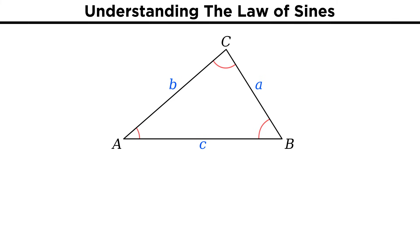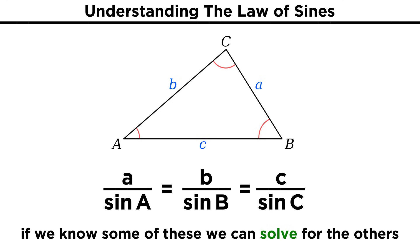This law says that for an oblique triangle with angles A, B, and C, all capitalized, as well as sides a, b, and c, all lowercase, where the sides are precisely opposite their corresponding angles, the relationship between all of these will be a over sine A equals b over sine B equals c over sine C. This is pretty easy to remember and not too hard to apply. We just have to know a few of these values and we will be able to solve for the rest.